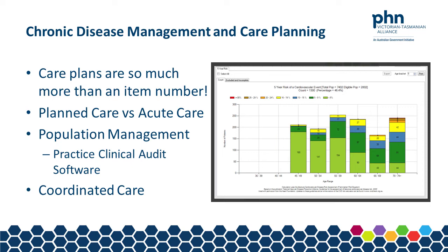Planned care versus acute care — is your practice culture about reactive or proactive care? For the best patient and business outcomes, we should aim to be proactively inviting patients with chronic conditions to the practice to have a care plan and regular reviews. This way we can see the patient when they are well and help them to self-manage. Population management — we can use clinical audit tools to find patients with specific conditions, then analyse the data and devise the necessary strategies to bring patients in for regular care.